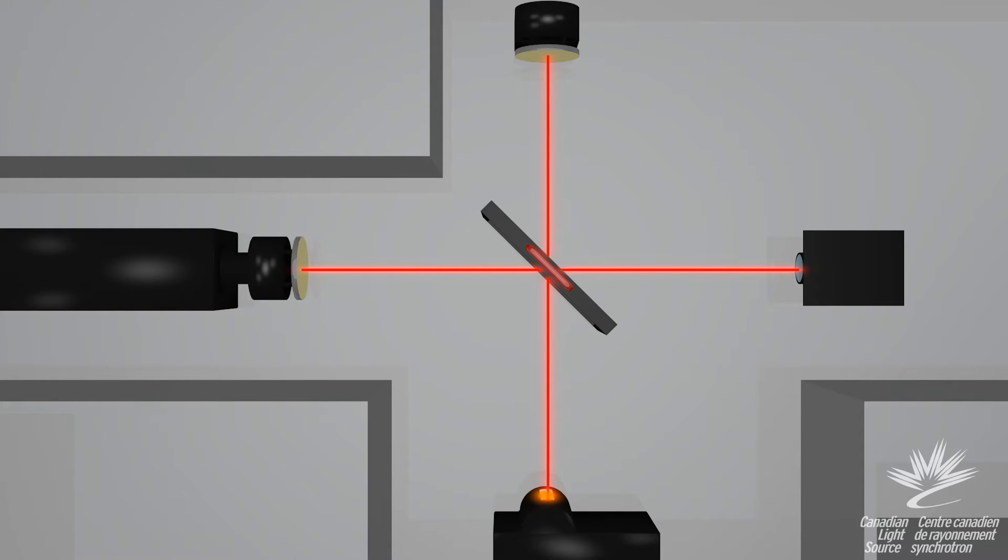The moving mirror slides back and forth, causing one of the beams to take a slightly longer path before recombining. This creates interference.